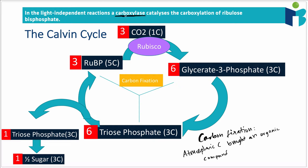Carbon fixation is carried out by a carboxylase enzyme called rubisco — one of the six proteins you need to know in topic 2.4 on the functions of proteins. Rubisco takes carbon from CO2 and combines it with the five-carbon molecule ribulose bisphosphate. This first forms an unstable six-carbon intermediate, which immediately splits into two three-carbon molecules.